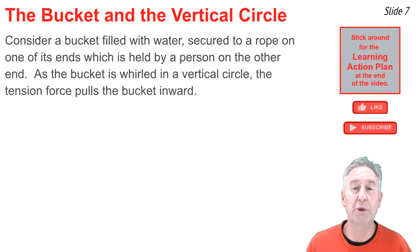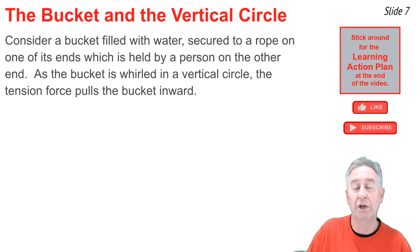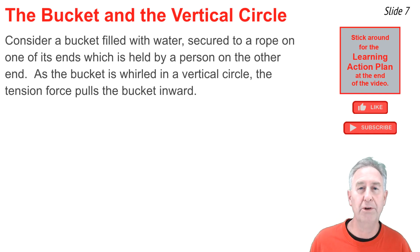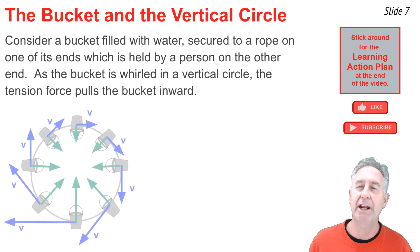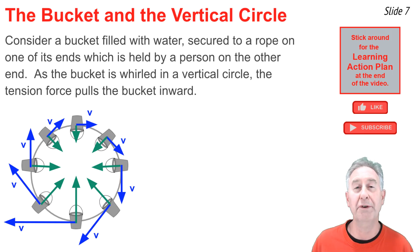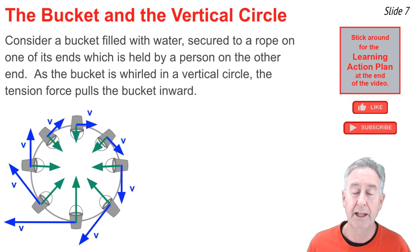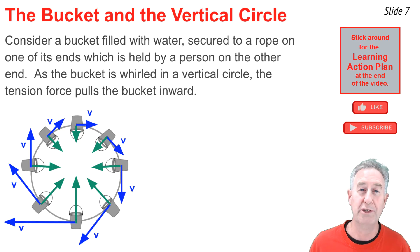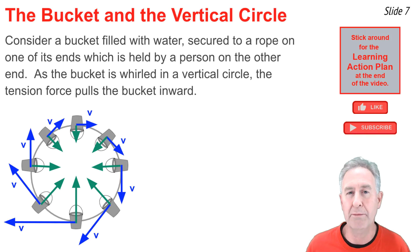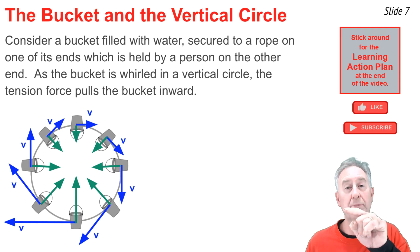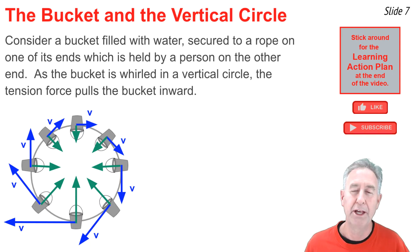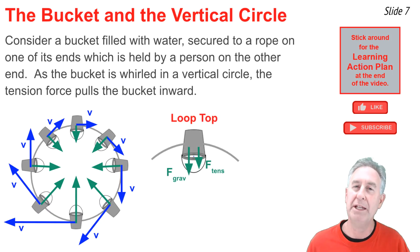Now let's consider a bucket filled with water, tied to a rope on one end and held by a person on the other. The bucket is whirled in a circle in a vertical plane, and the tension in the rope pulls the bucket inwards at all points. The force of tension is not the only force acting on the bucket, but it is the one force that always acts centripetally. There is also the force of gravity, which acts downwards in all situations and is only towards the center at the 12 o'clock position.